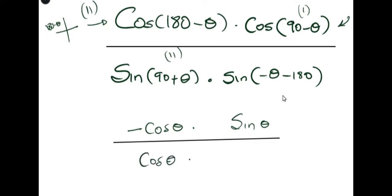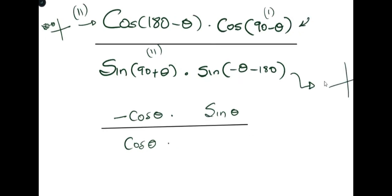And finally I have sin negative theta negative 180. We understand that this here is also in the second quadrant of the negative angle. And as you know, sin is positive in the second quadrant. So this here can just be written as sin theta.